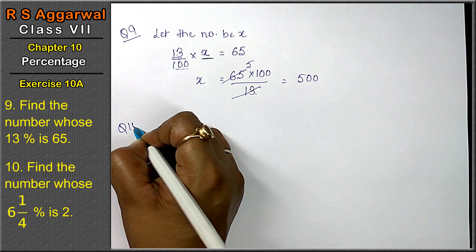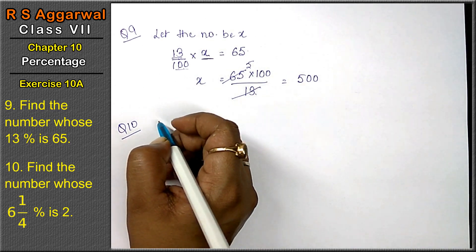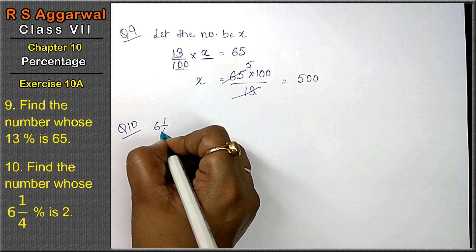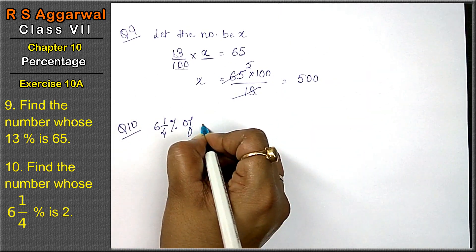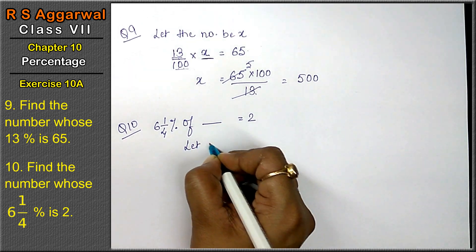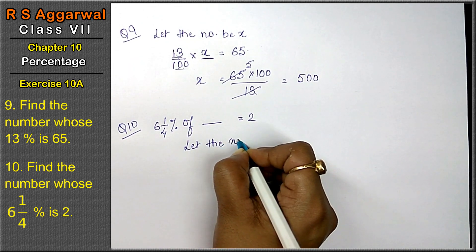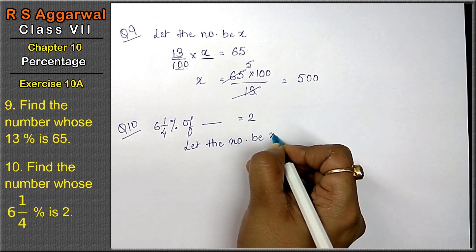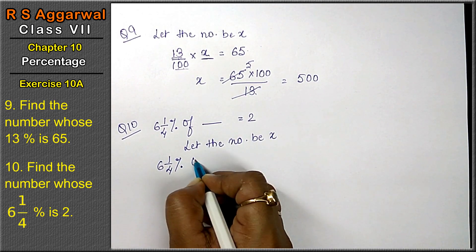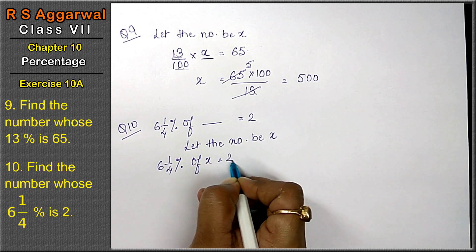Let's do question number 10. Question number 10 is find the number whose 6 whole 1 upon 4% of that number is 2. Hence let the number be x. Now 6 whole 1 upon 4% of x equals to 2.